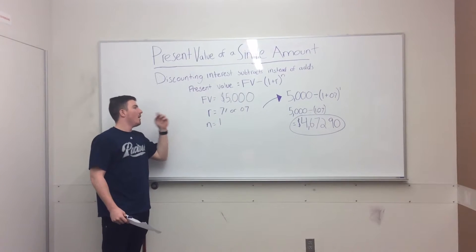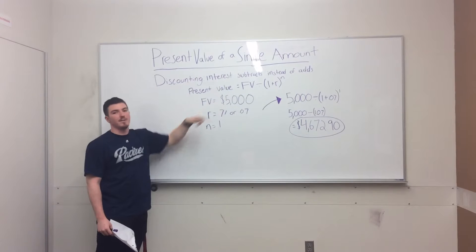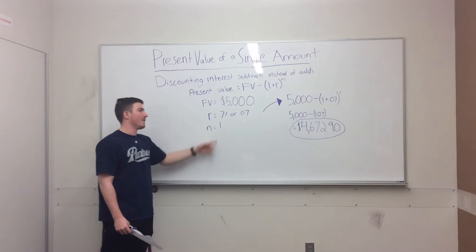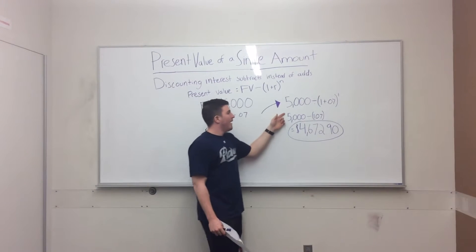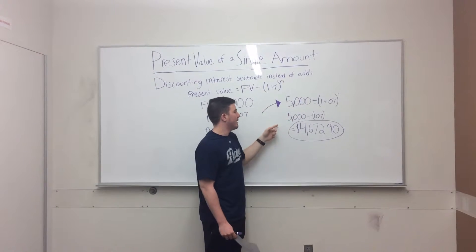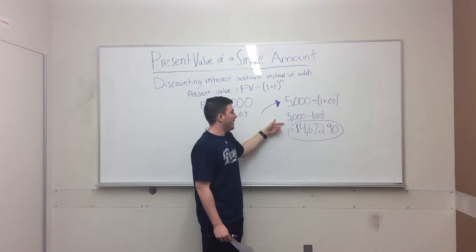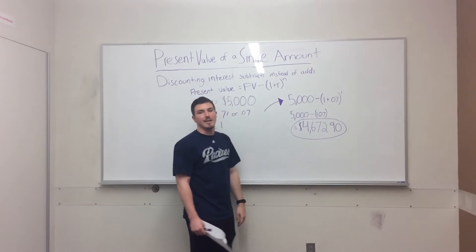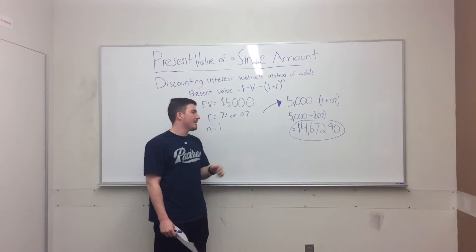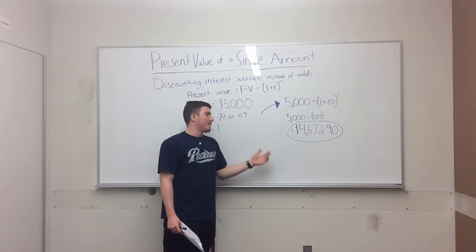For this example, let's assume we're trying to find out how much you need to invest one year ago to get $5,000. The interest rate is going to be 7%, which would be 0.07, and it's just for one year. You take the $5,000 and divide by one plus 0.07, to the one power. That gives you $4,672.90, which means today you would have to put $4,672.90 into the bank to get $5,000 out. That's for one year.